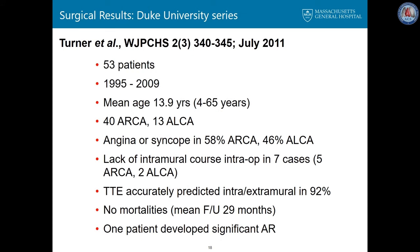There are several results of surgical series in the literature. One of the earlier ones was from Duke University, written by Turner: 53 patients over a period of 14 years. The mean age was nearly 14 years, with 40 anomalous right and 13 anomalous left patients. Symptoms were slightly more common in the anomalous right group. Intraoperatively, the lack of an intramural course was seen in seven cases, seemingly more common in the right coronary. Transesophageal and transthoracic echo predicted the intra- or extramural course in the majority of patients. With a follow-up of just under three years, there were no deaths, but one patient required replacement of the aortic valve.